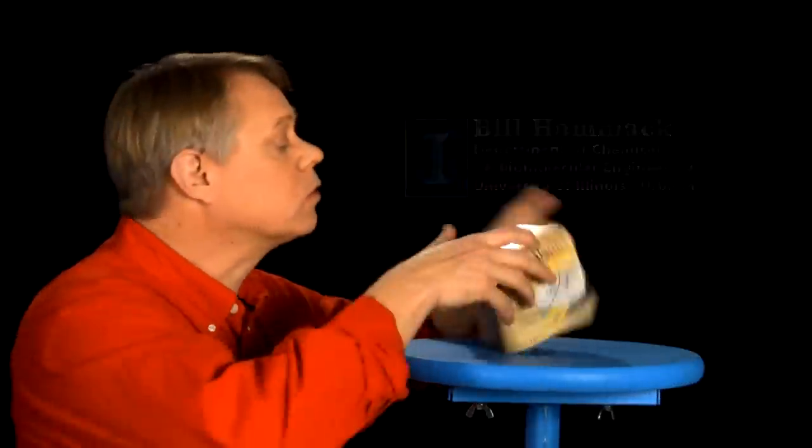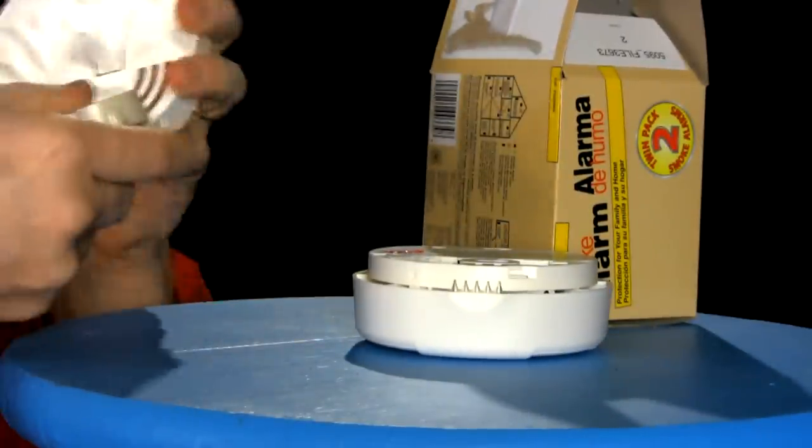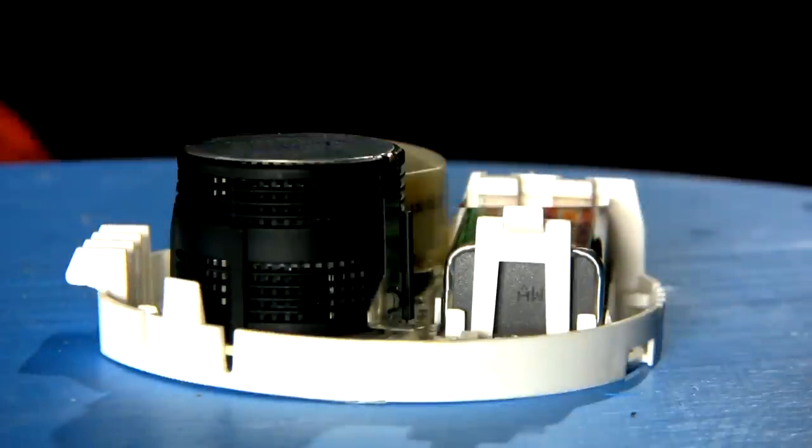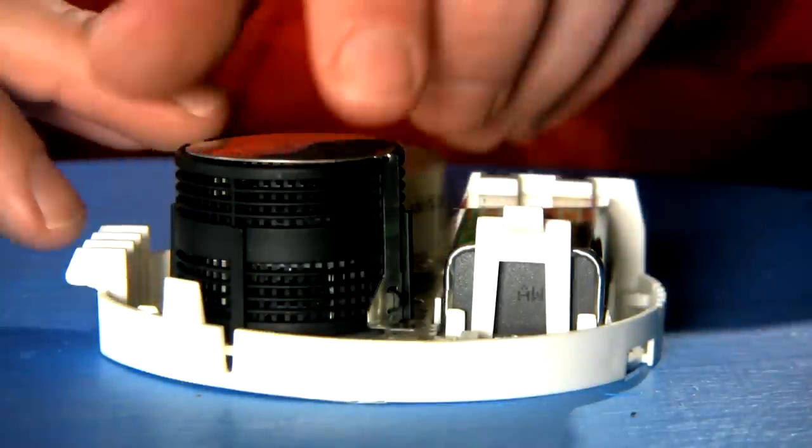I find smoke detectors a marvel of engineering. Let me show you how it works. This black cylinder has louvers which guide air into the detector. Now it hides the essential part of the device.